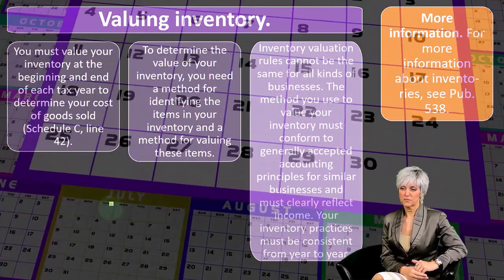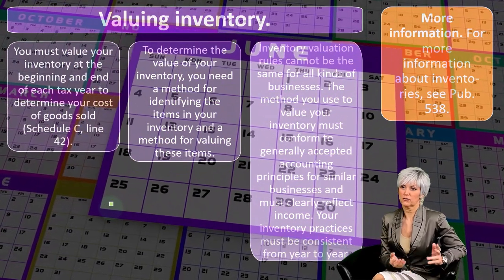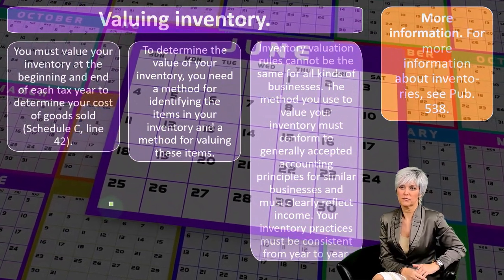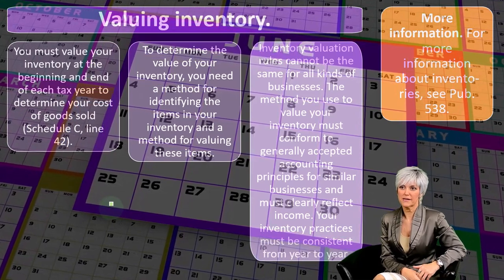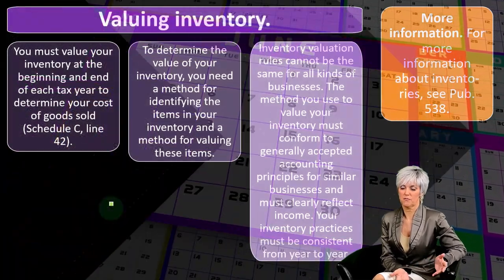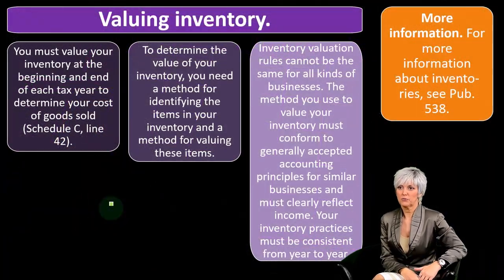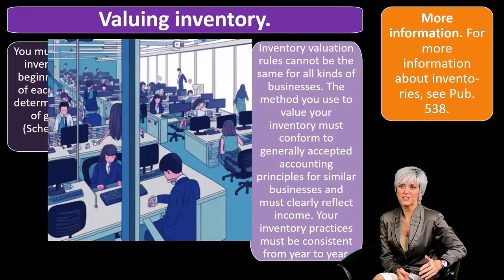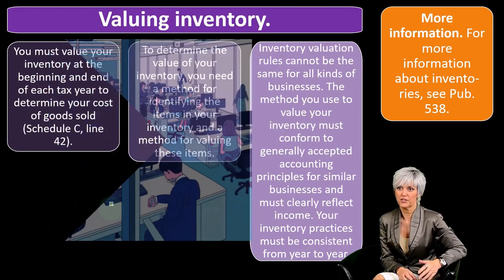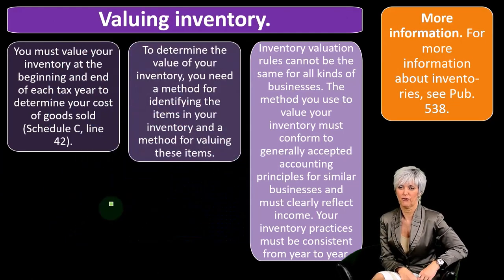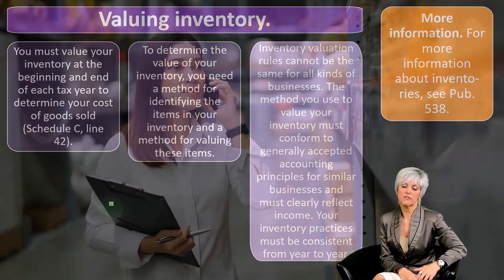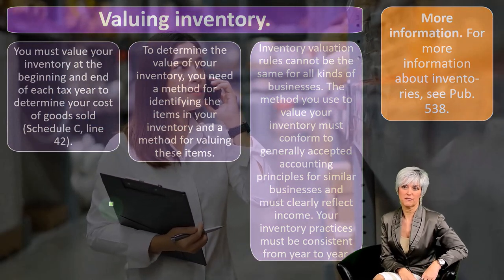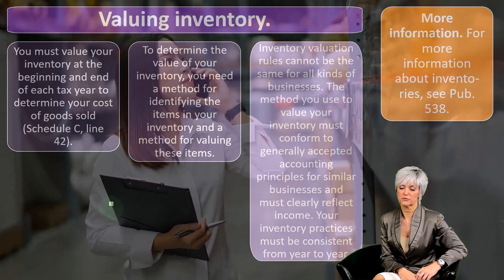That consistency is something we have to maintain, otherwise there could be manipulation. For example, if you changed flow assumptions from first-in first-out to last-in first-out to weighted average, you can severely change the value of your inventory — and that would be a manipulative thing to do.